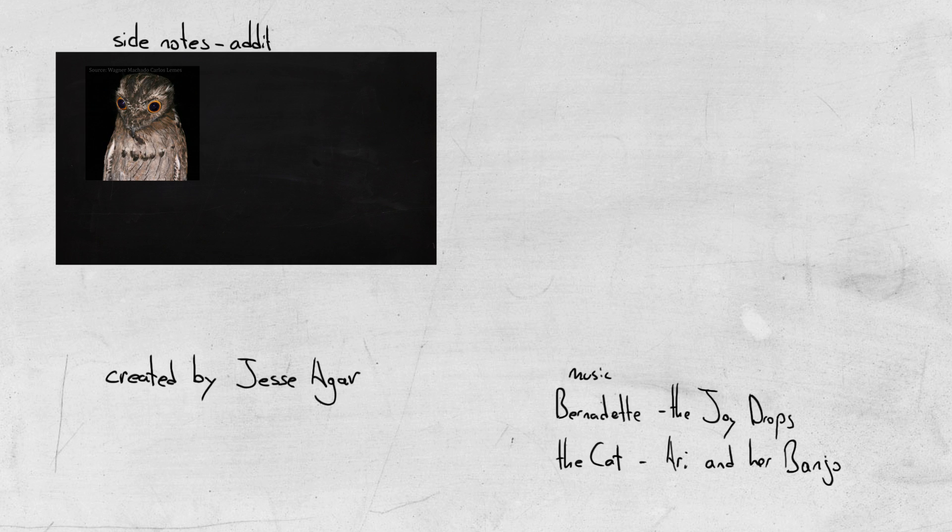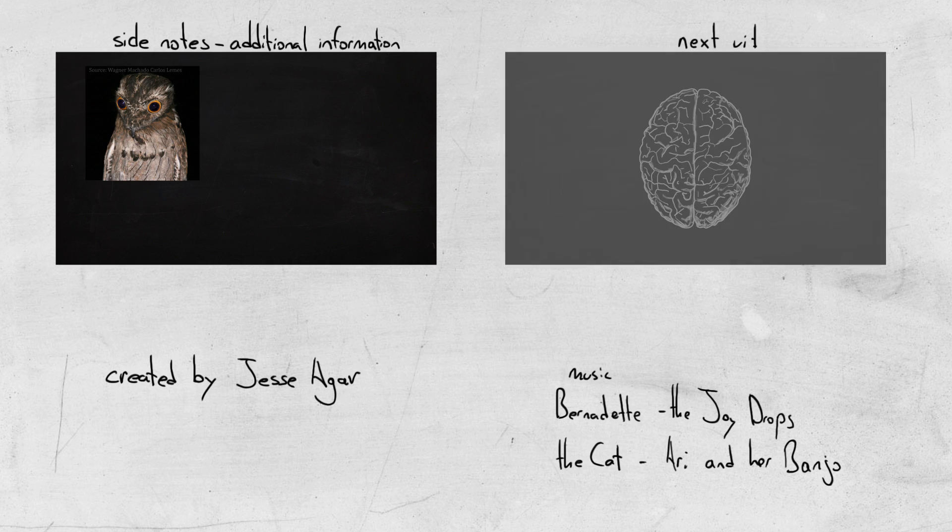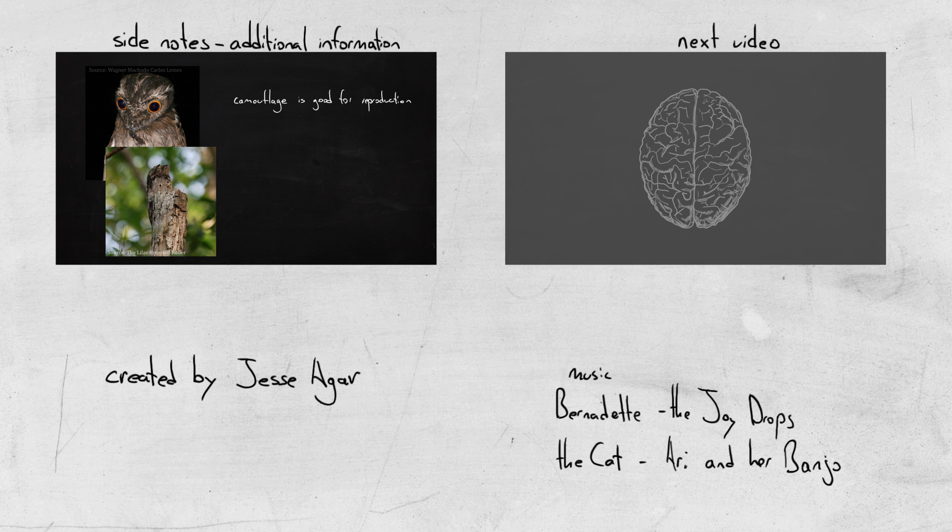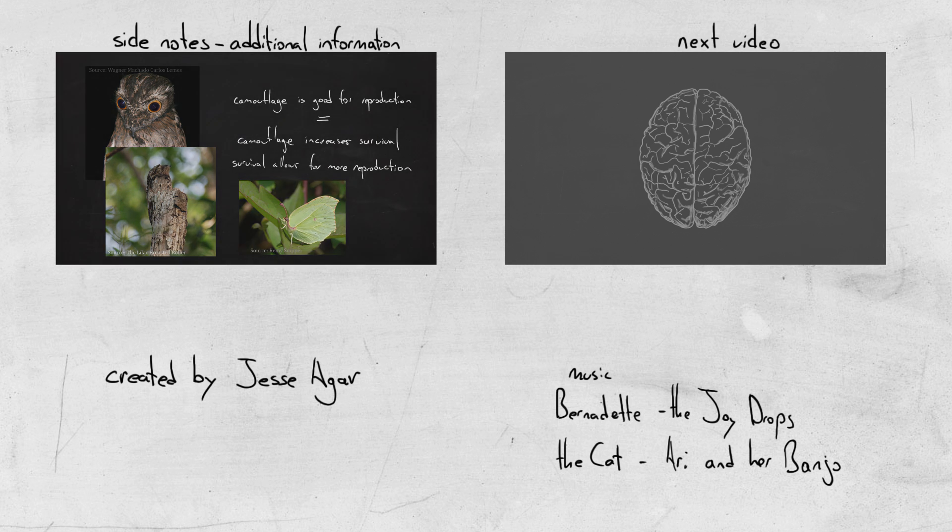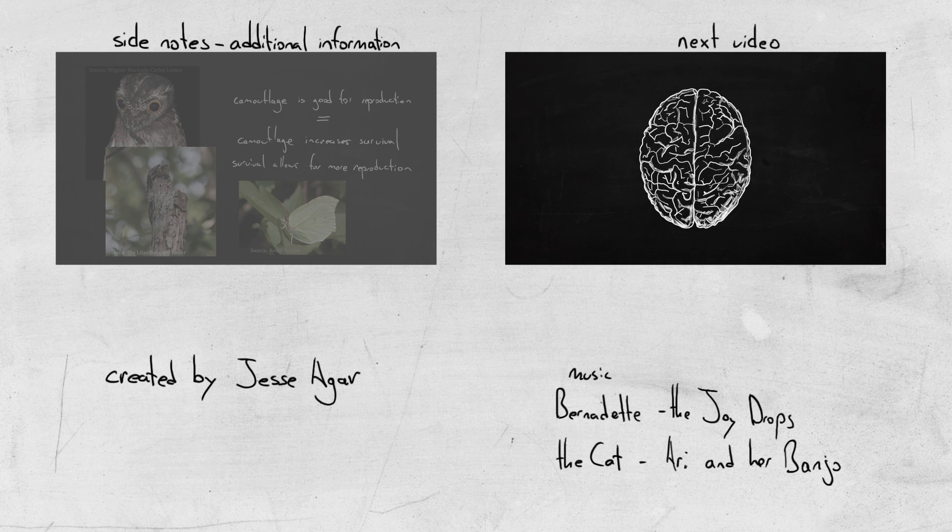In evolutionary theory, people often talk about things only in terms of reproduction. Like, camouflage is good because it helps reproduction. I think because reproduction is the more important thing, it's sort of a shorthand for saying camouflage helps survival so that the organism can go off and reproduce more.